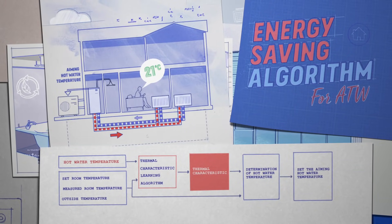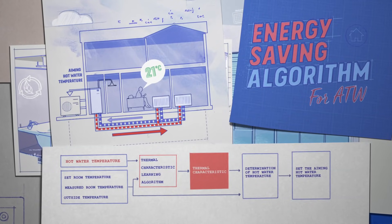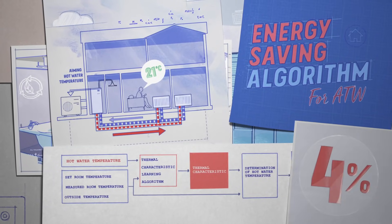That keeps temperatures more consistent and saves energy. With the algorithm alone, we can reduce power consumption by 4%.